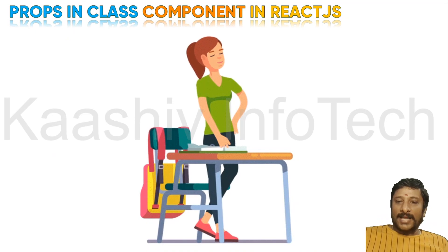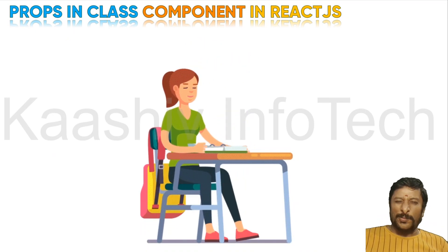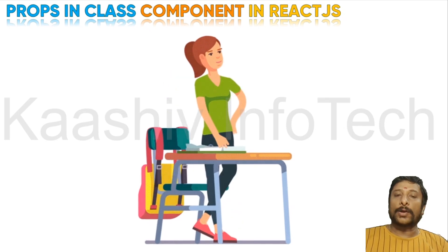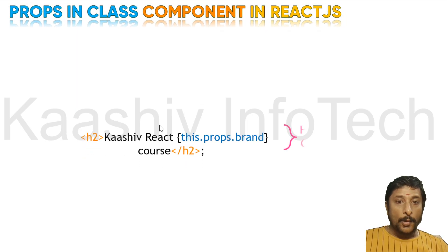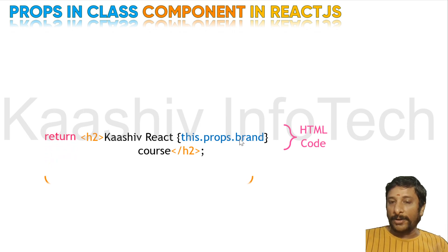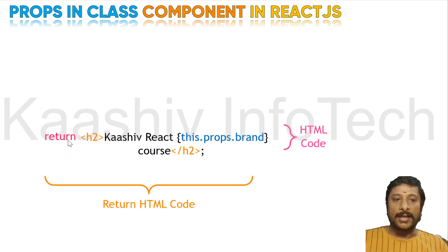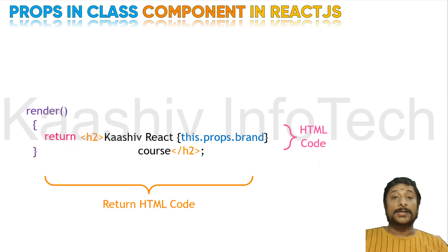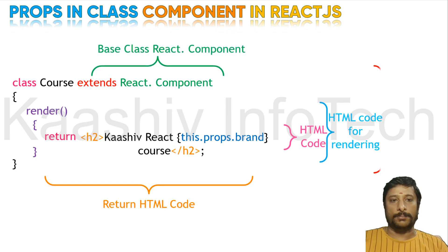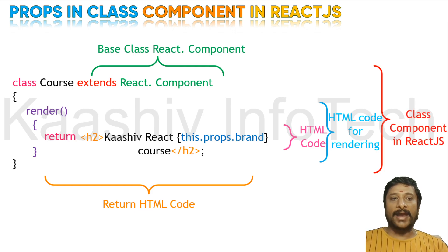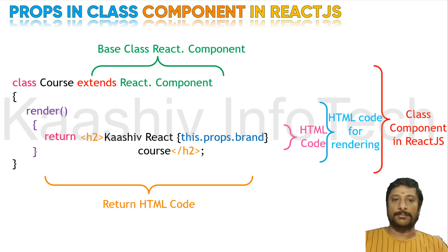Now it's time to move to the next area: props in the class component in React JS. In the HTML we use this.props.brand — as we discussed previously. The class has a render method, and the class 'Course' extends React.Component. If it is a class, you have to extend it using React.Component — that is the base class. So the class component is ready with the HTML code for rendering.